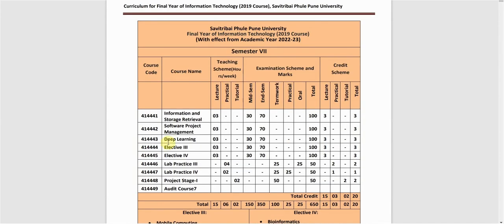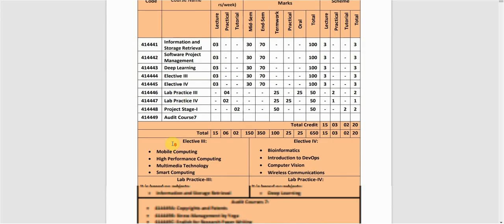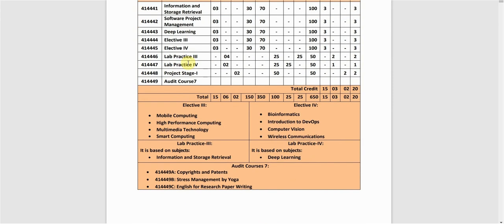We have the subject of deep learning with course code 414443. The mid-semester exam is 30 marks and the end-semester exam is 70 marks. The total credits for this theory subject is 3. There is also a lab associated with the subject.